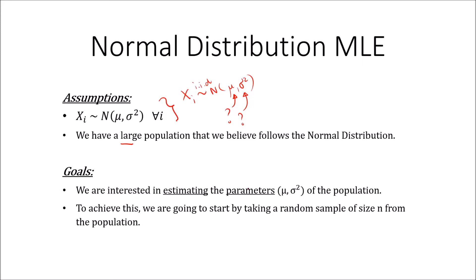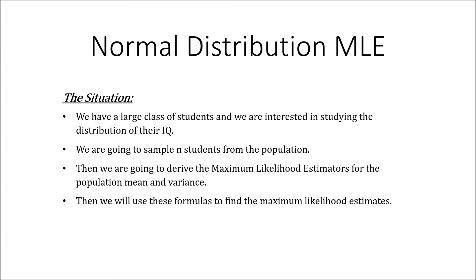Our goal is to estimate the parameters mu and sigma squared — the population mean and the population variance. To achieve this, we're going to start by taking a random sample of size n from the population. This is the situation in which we find ourselves.